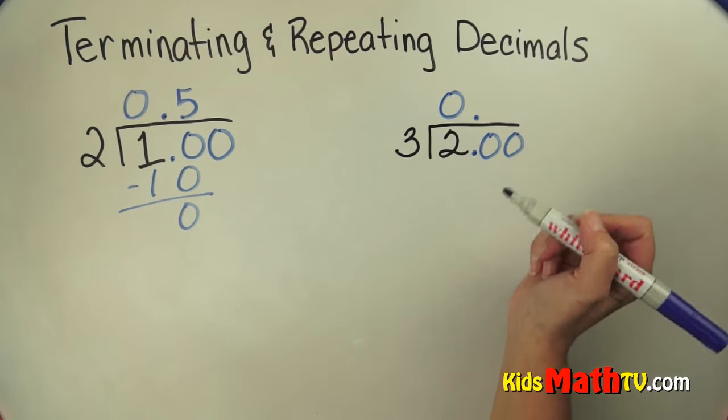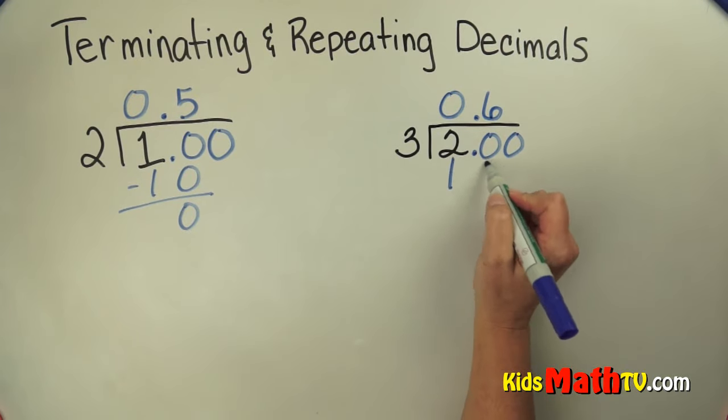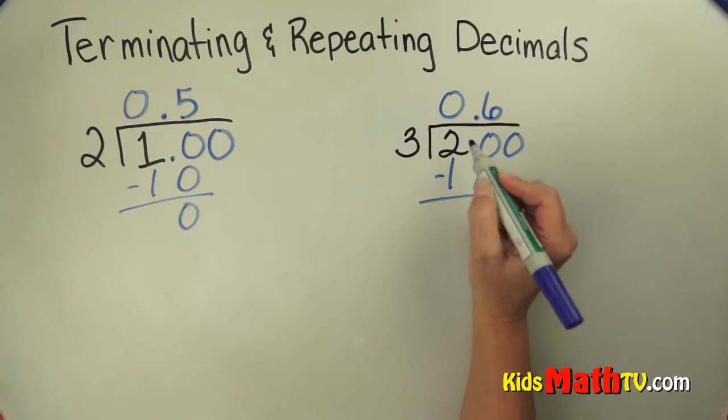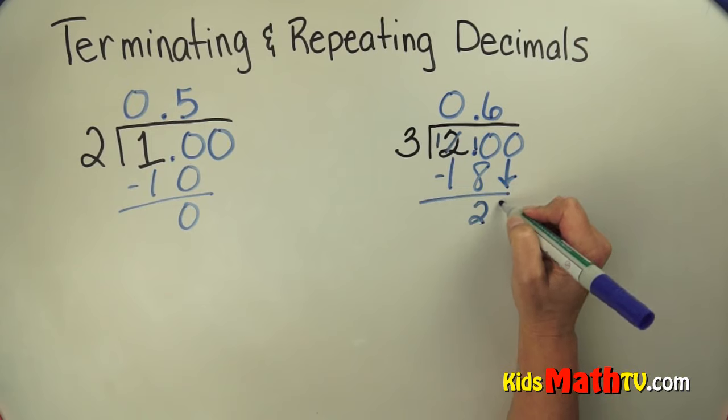How many 3's are in 20? Well 3 times 6 is 18. That's as close as I'll get. So 18. And then I subtract. And when I subtract I get 2. So then I bring down a 0.